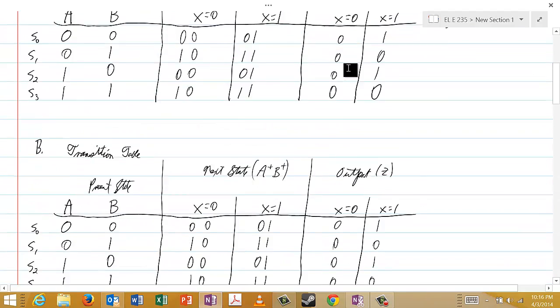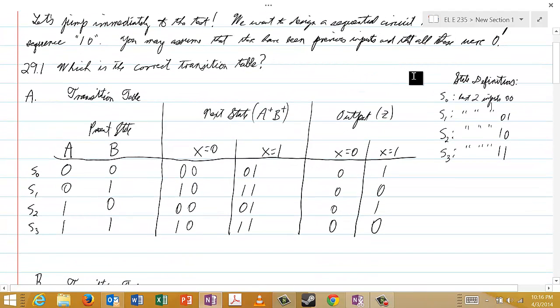And let me make one more comment. Just as we did in the previous problem, we'll define S0 to be the state for which the last two inputs are the sequence 00. S1 is the state in which the most recent two inputs are 01. S2 is the state in which the most recent two inputs are 10. And S3 is the state in which the most recent two inputs form the sequence 11.